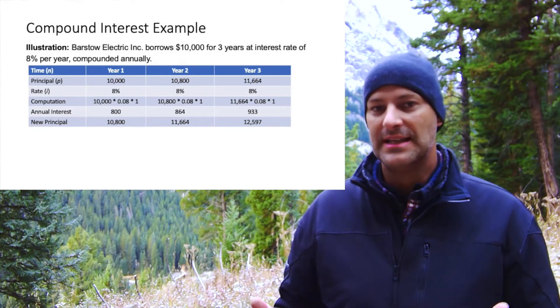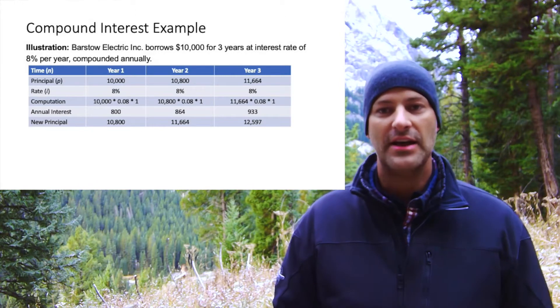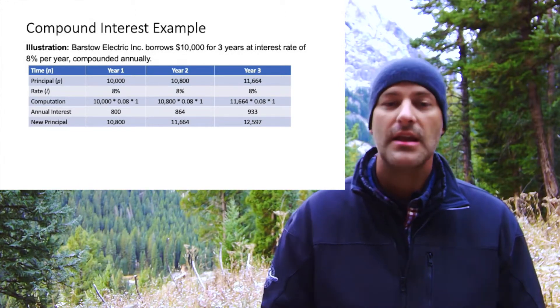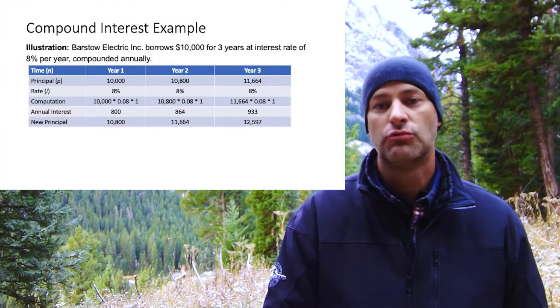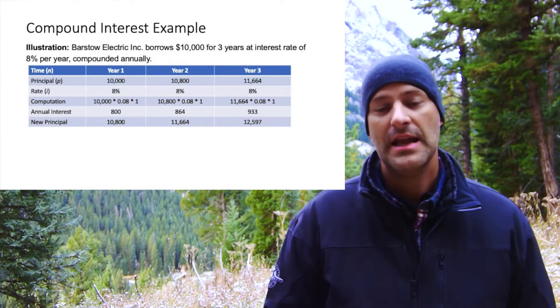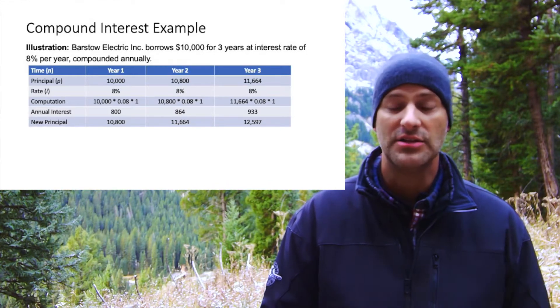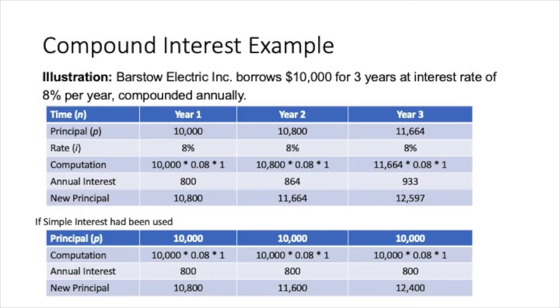In year three, the new principal is $11,664 at 8%, so the annual interest grows to $933, making the new principal balance $12,597. Compare this to simple interest: at the end of year three, simple interest only accrued $2,400 of interest. Under compound interest, they've accrued $2,597 — almost $200 more. That is the key difference between compound and simple interest.